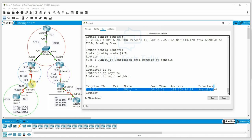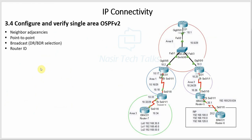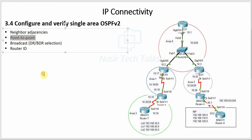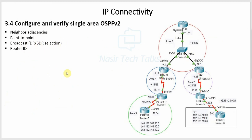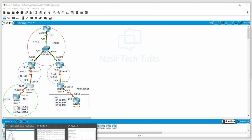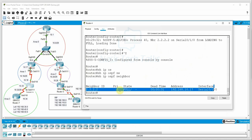According to the CCNA New Syllabus, we have demonstrated neighbor adjacency, point-to-point DR/BDR election behavior, how router OSPF process runs, broadcast network OSPF, and how to set the router ID. In the next session, we will cover virtual link and redistribution in OSPF advanced configuration. Thank you for watching — please like, share, and subscribe to the channel.